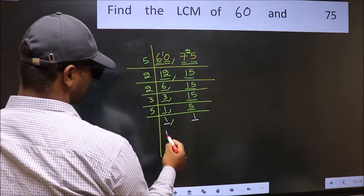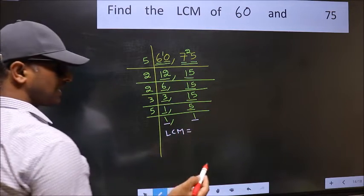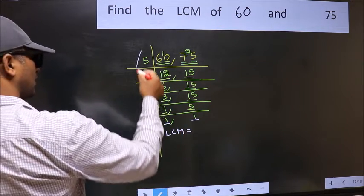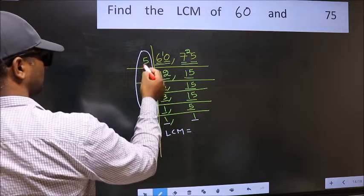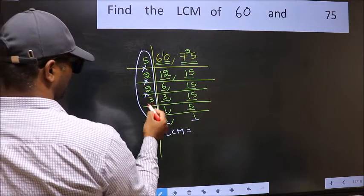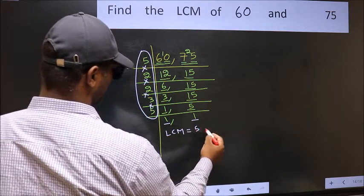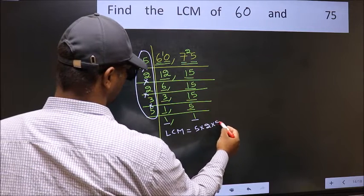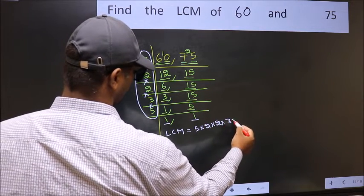So our LCM is, LCM is the product of these numbers. That is 5 into 2 into 2 into 2 into 3 into 5.